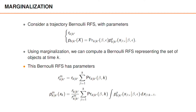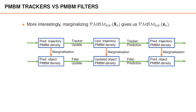This is one example of how we can obtain the distribution of the set of objects at one time from the distribution of the set of trajectories. Given the PMBM posterior over the set of trajectories, we can always perform a marginalization to obtain the PMBM posterior over the set of objects. This result also holds for the predicted PMBM distribution. As illustrated in the figure, given a predicted trajectory PMBM distribution, we can marginalize and then update to obtain the posterior object PMBM distribution, or we can first update to obtain the posterior trajectory PMBM distribution and then marginalize to obtain the posterior object PMBM distribution.